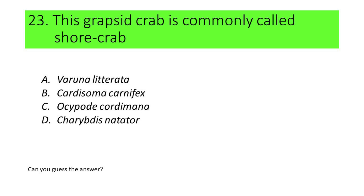Number 23. This grapseid crab is commonly called shore crab. A. Varuna leterata, B. Cardisoma carnifex, C. Oxypodic or dimana, and D. Charibdis natator.